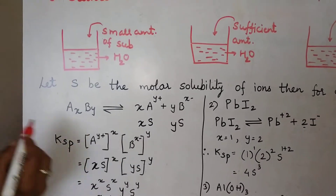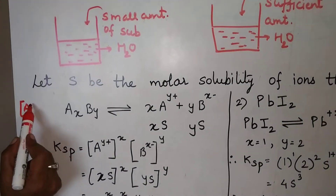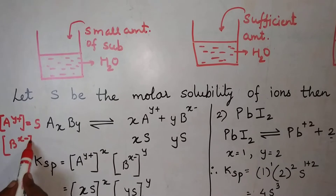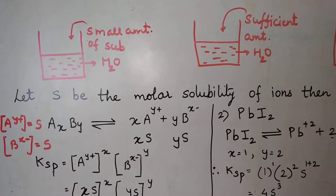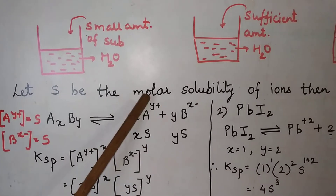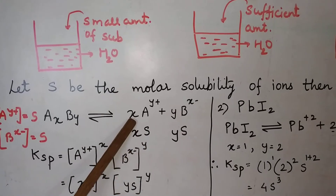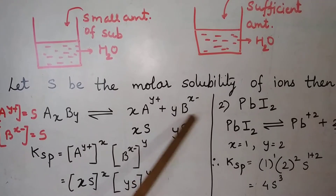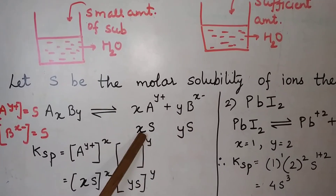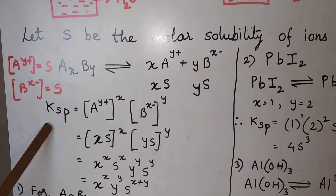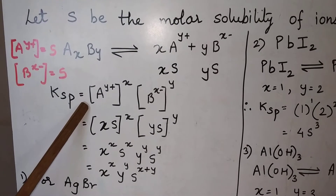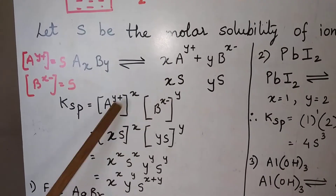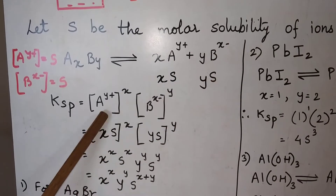Considering the solubility of one ion as S: ion A(Y+) has solubility S, and similarly the other ion B(X−) also has solubility S. We assume the molar solubility as S and S. In the equation, X times A(Y+) gives XS, and Y times B(X−) gives YS. Now come to the KSP expression. KSP is equal to the product of concentration of the ions raised to the power of their coefficients — that is, concentration of A(Y+) raised to X, multiplied by concentration of B(X−) raised to Y.